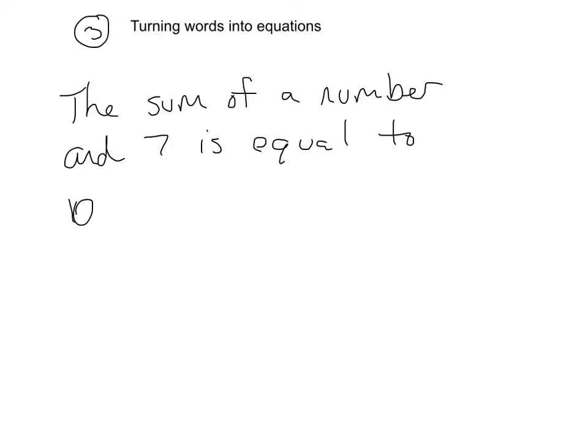Alright, so first we're actually going to turn words into equations. So if I gave you the sum of a number and 7 is equal to 10, how do we turn those words into an equation? Well, the sum of a number and 7, so we're talking about addition, and we're adding a number and 7, and it is equal to 10. So there you go. It's as simple as that.